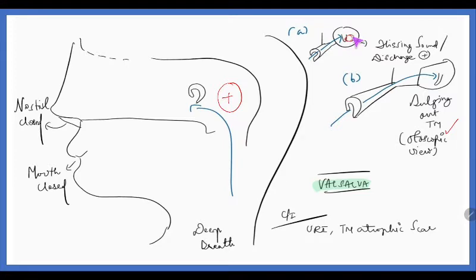But if at all there is a tympanic membrane perforation, there can be a hissing sound. Or if at all there is suppuration in the middle ear cavity, that discharge will come out into the external auditory canal by the positive pressure which is created. This also indicates that there is patent Eustachian tube.